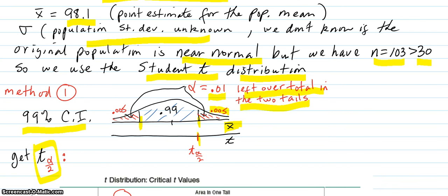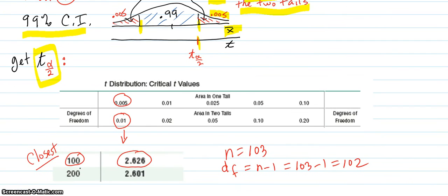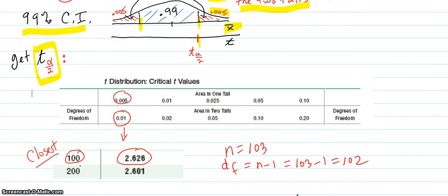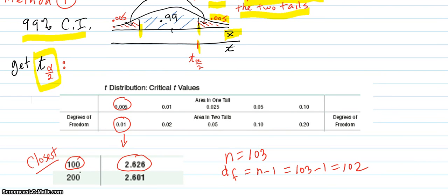We're going to go over to our table, which is provided in the book and is also online. And it looks like this, t-distribution critical t-values. And you have your degrees of freedom here.